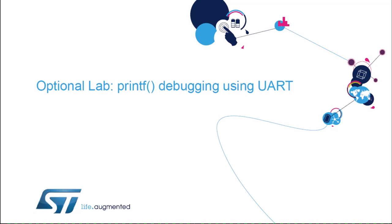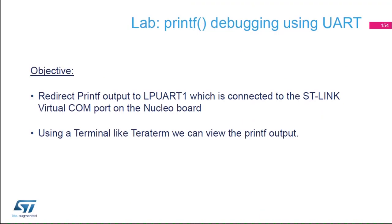In this module, we're going to use and configure a communication peripheral — in this case, a UART. We're going to use printf debugging using a UART. The objective of this lab is to redirect the printf output to the LP UART of the STM32G0, which is connected to the ST-Link virtual COM port on your Nucleo board.